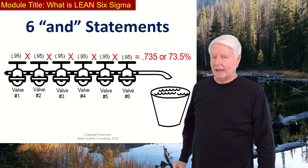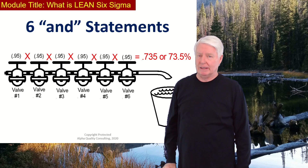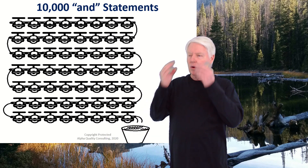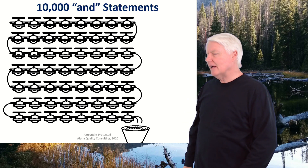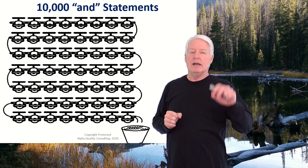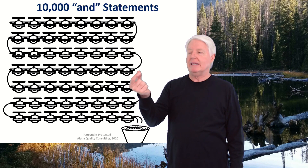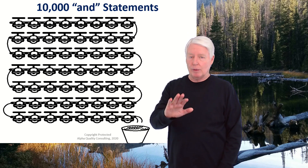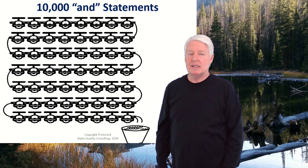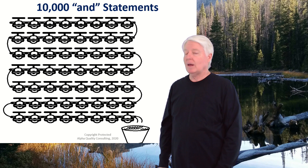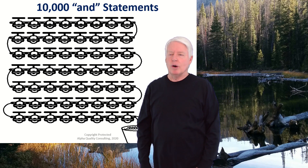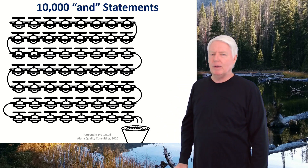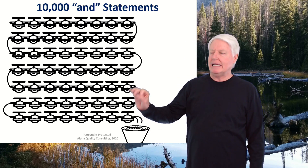We're living in a world of increasing complexity, and we need people who know how to handle it. Those people are called Lean Six Sigma practitioners. This is the fundamental equation: the probability of success equals the probability of an individual AND statement raised to the power of the number of AND statements. With 3 AND statements at 95%, the result is 85.7% overall probability of success.